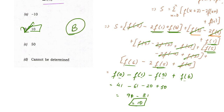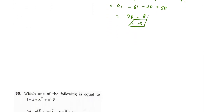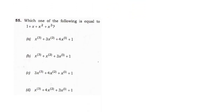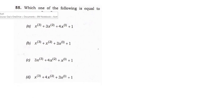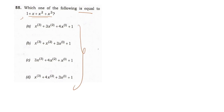Moving on to question number 55: which one of the following is equal to 1 + x + x² + x³? We can find individual equations for the given options using factorial notation and trial and error to check which one matches the value 1 + x + x² + x³.